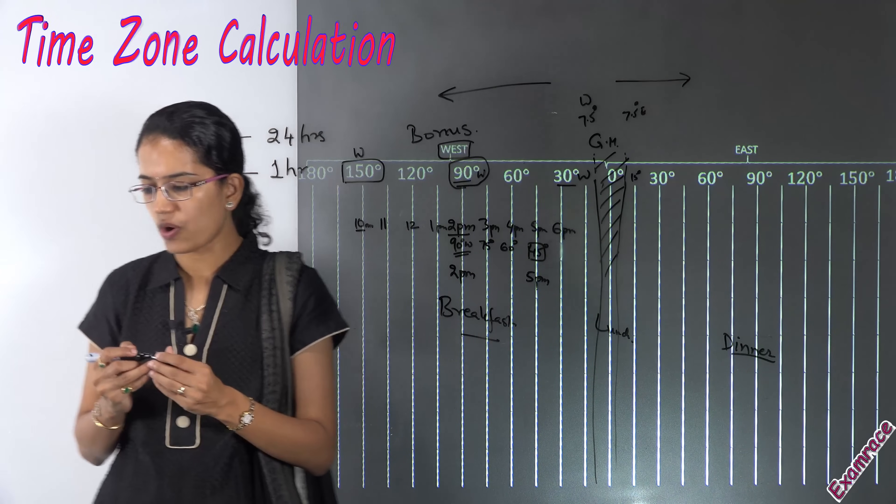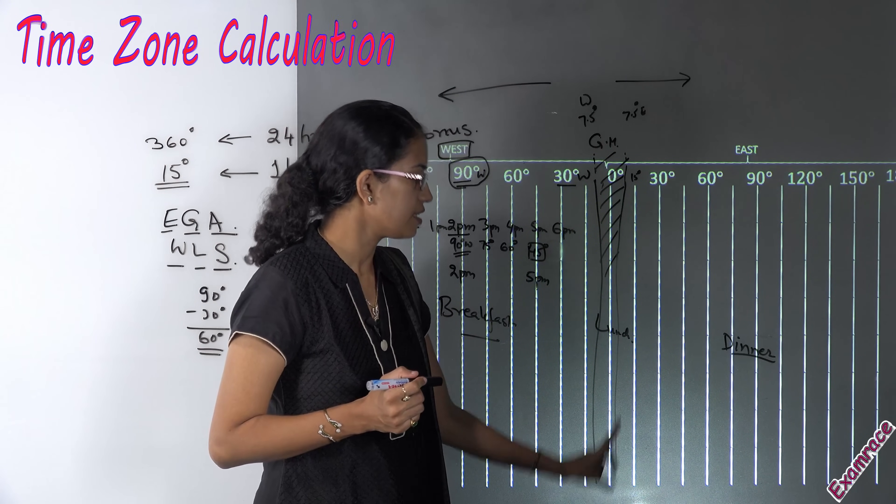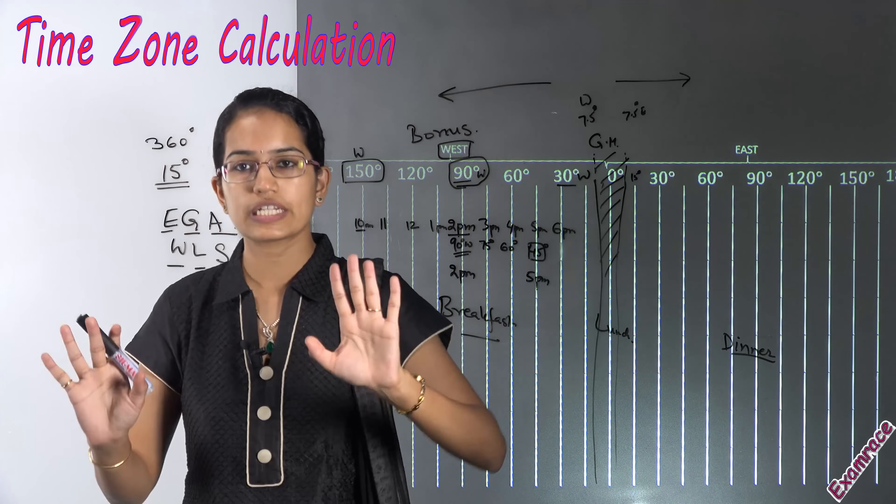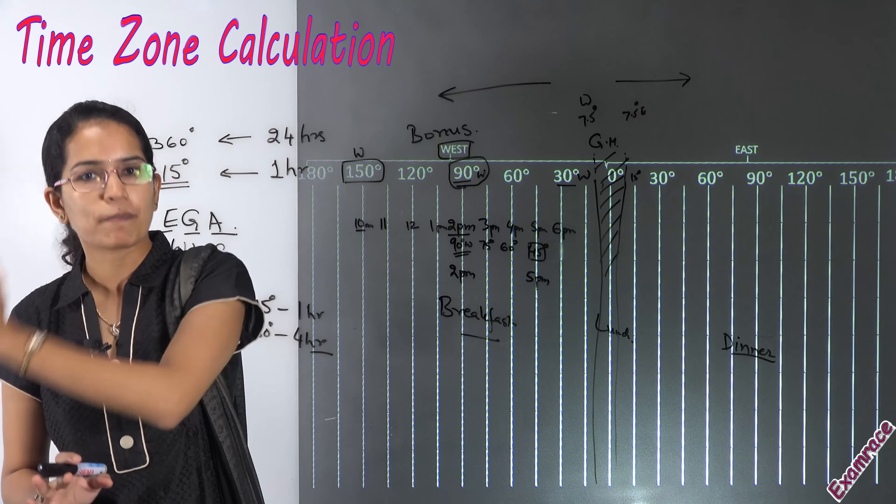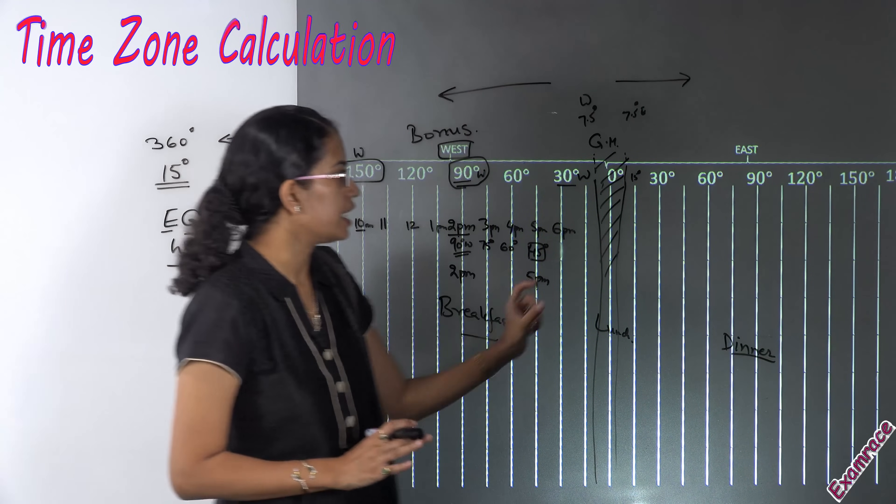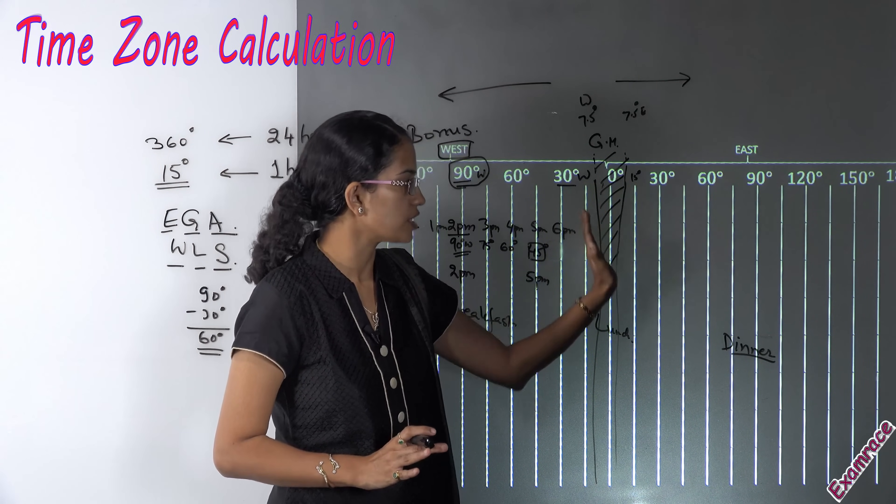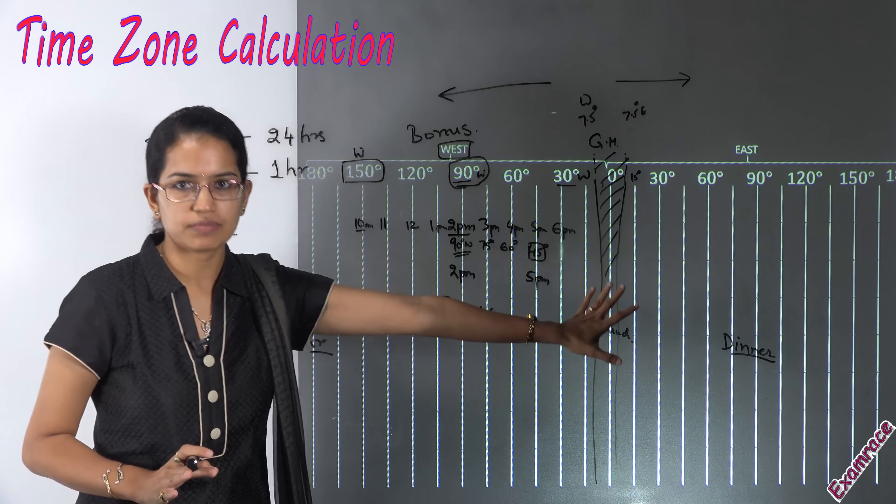The next important thing here is understanding the role of zero degree meridian. So this zero degree meridian has nothing to do with date changes that we would understand totally in a separate lecture where we will be talking about international date line.